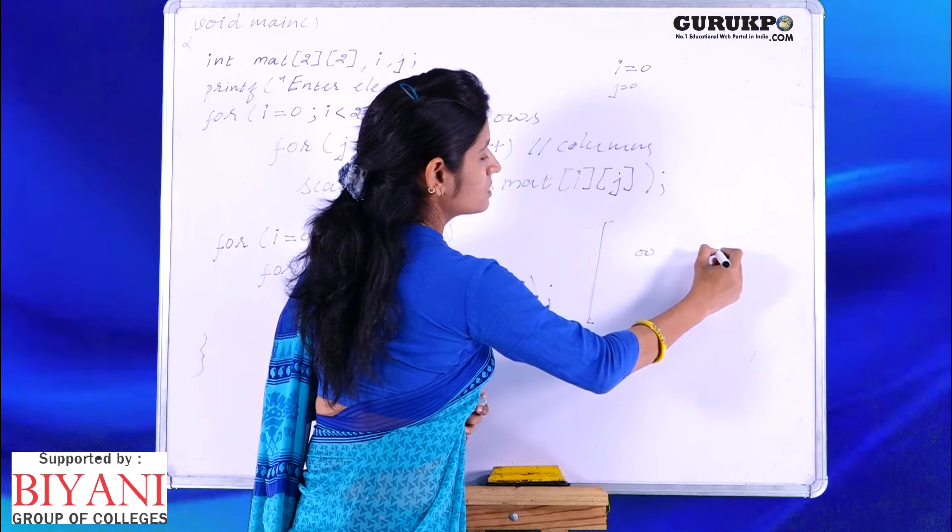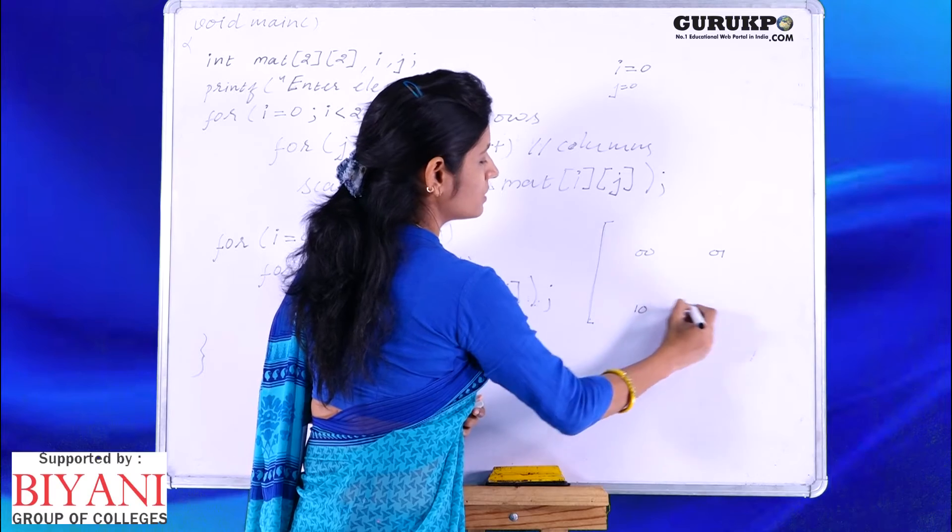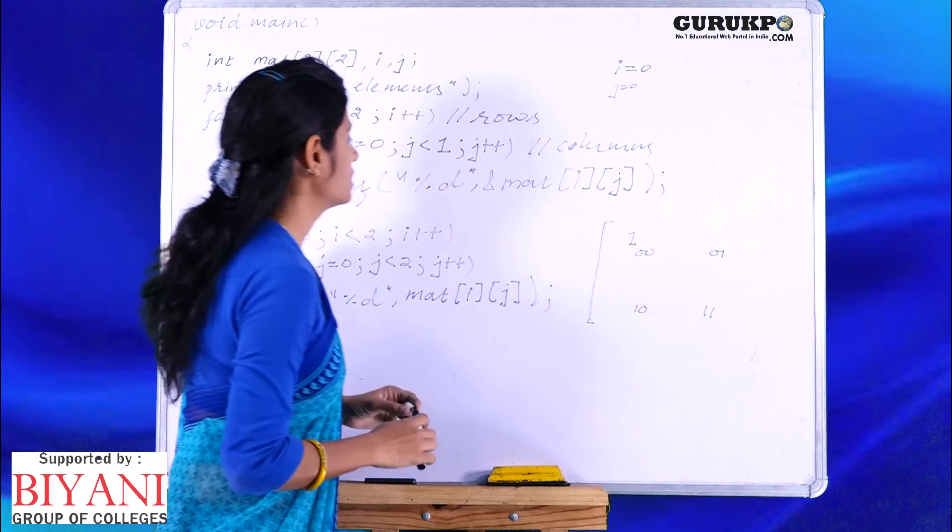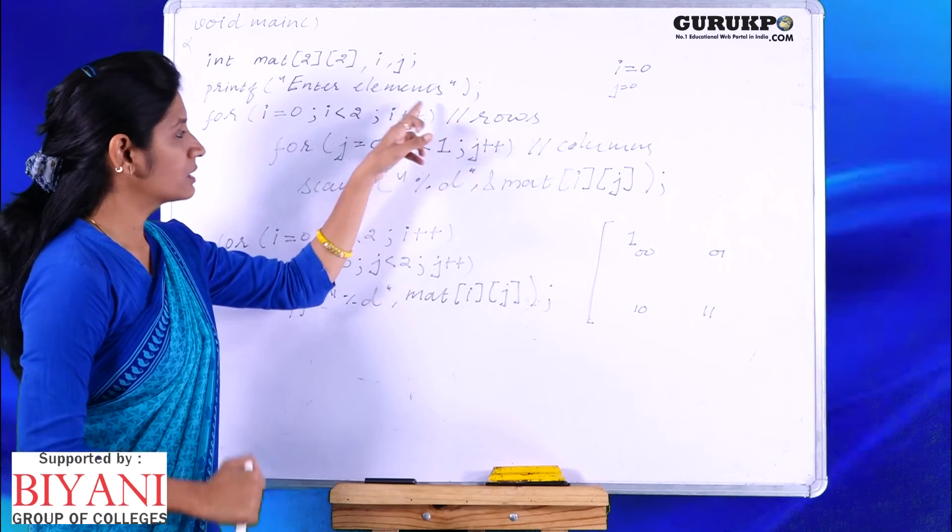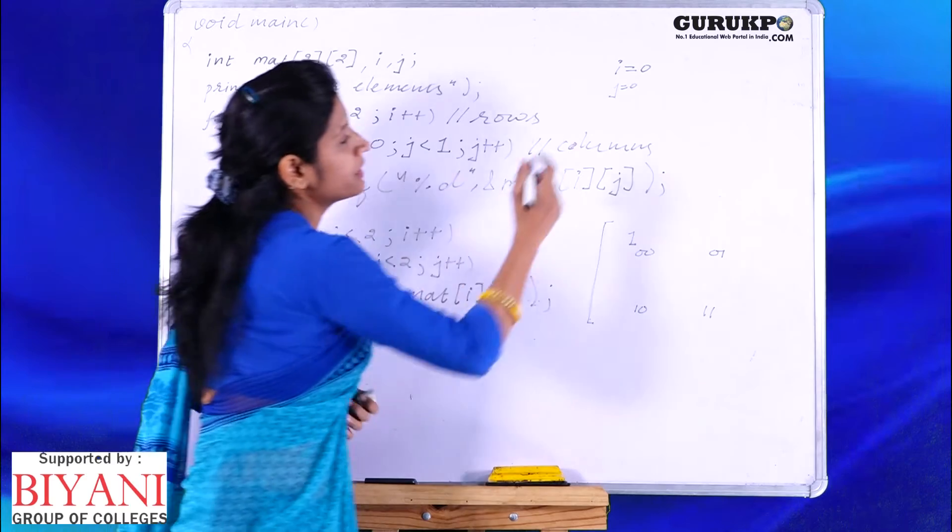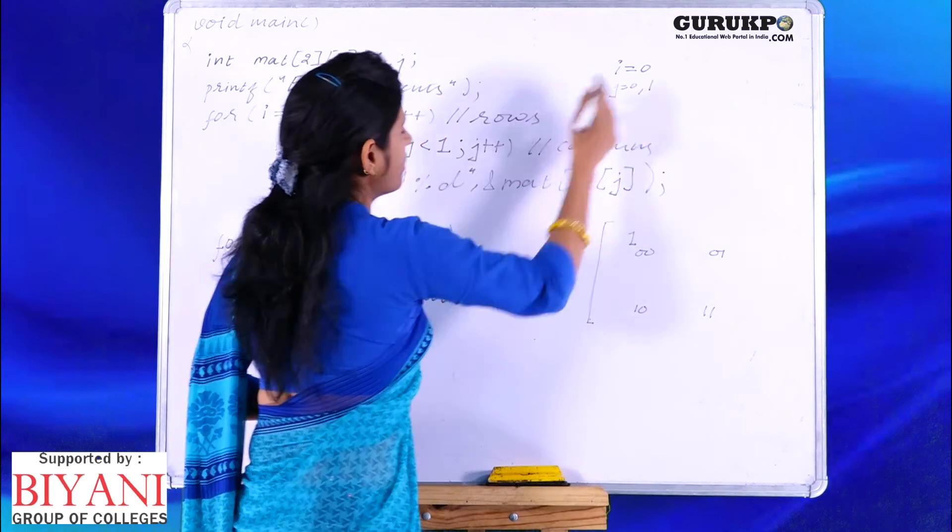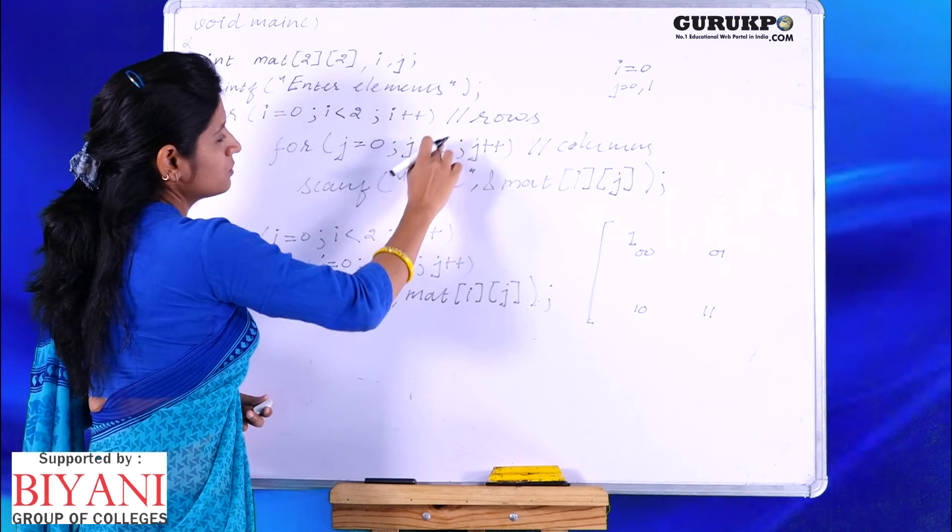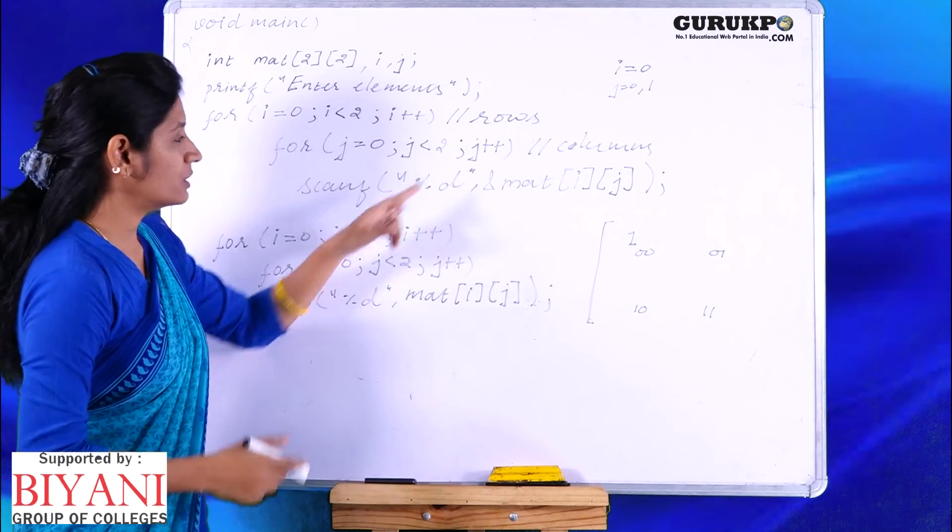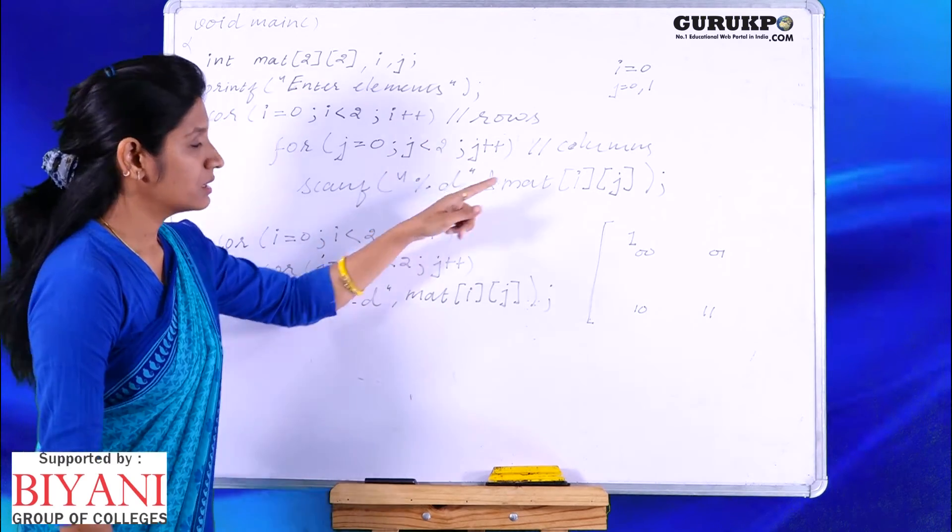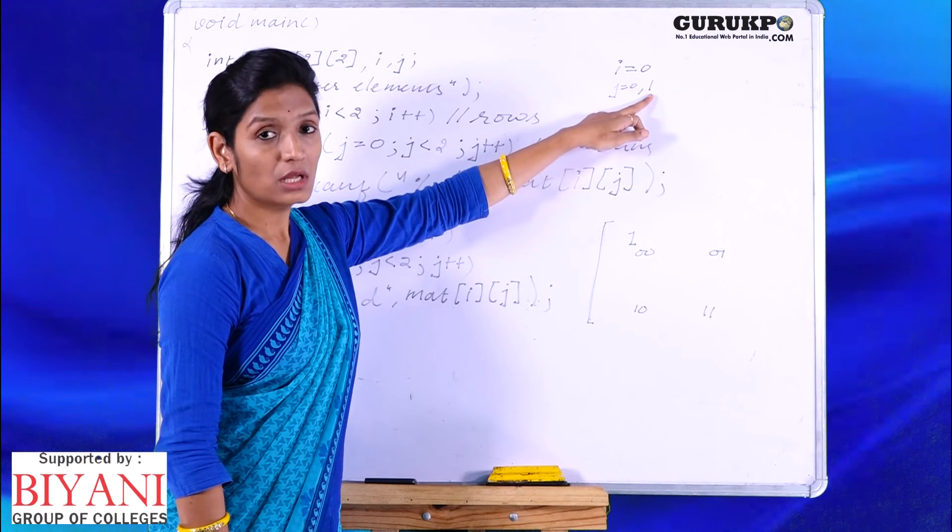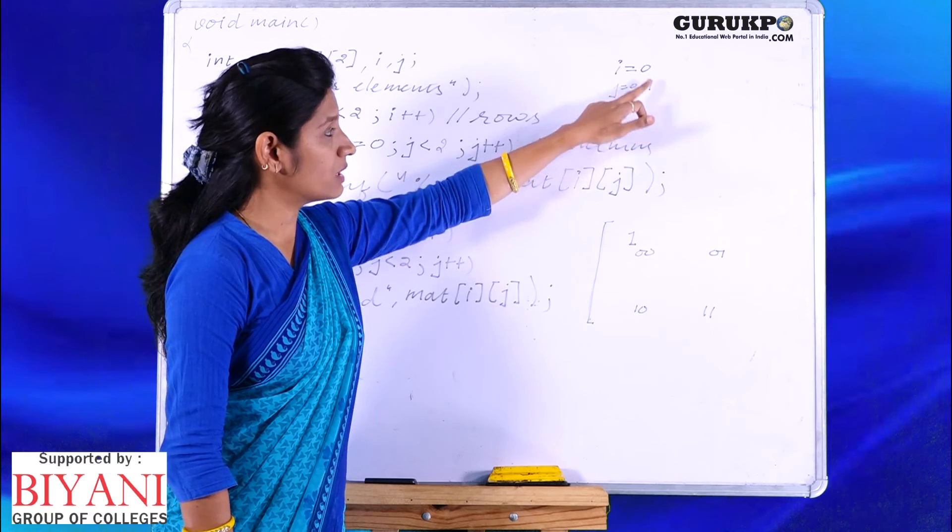This is 0,0, 0,1, 1,0, 1,1. First value will go at 0,0. Now the loop will iterate, it will move to j plus plus, j will be incremented, the value will be 1. 1 is still less than 2, we will come inside, next value will go to 0 and 1. The new value of j is 1. This is 0 and 1. Suppose user has entered 2, 2 will move to 0 and 1.